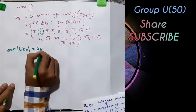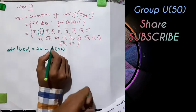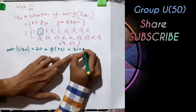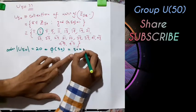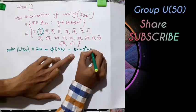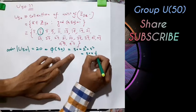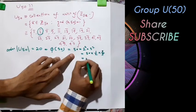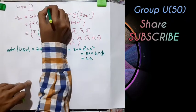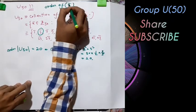The order of U50 is 20, computed using Euler's phi function. Since 50 = 2² × 5², we get φ(50) = 50 × (1/2) × (4/5) = 20. Now we want to find the order of 3-bar in U50 under multiplication.